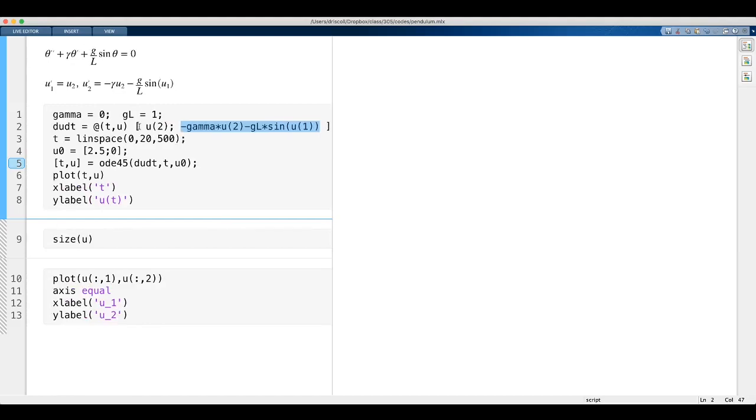And we could define this in a separate file if we wanted to, but it's so small here, we can just do it right in line. Now I'll define t to go from 0 to 20. My initial condition is an initial condition on the vector u. So let me first do it with a small angle. So I'm going to hold the angle at 0.5, and then it'll be at rest, and then I let it go. And then the rest of this is I'm going to solve the ODE and plot it.